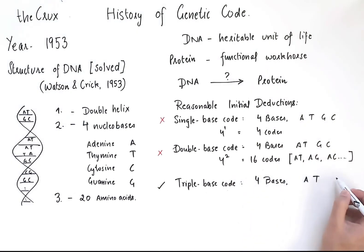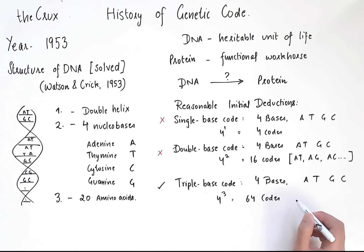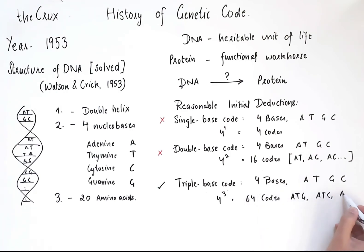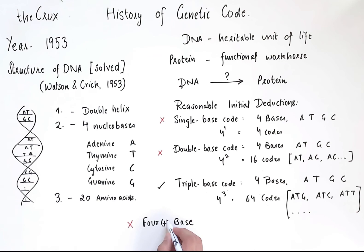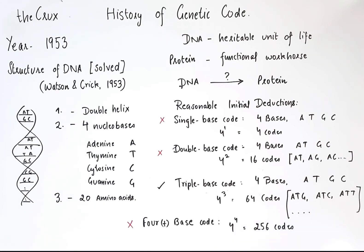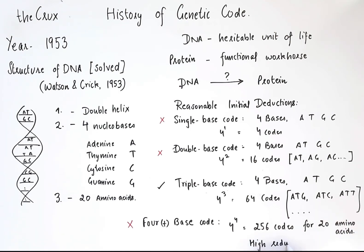The key deduction was that there could be a triple base code, because that gives 64 possible codes, which could result in 64 potential amino acids, but there are only 20. This code can at least generate 20 amino acids, and since nature works to optimize resources, it would appear reasonable that a three base code is favored — not a four, five, or higher base code — where you have more possible codes and therefore higher redundancy.